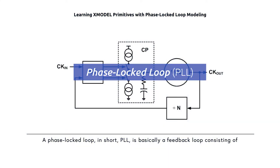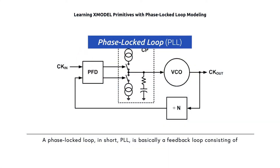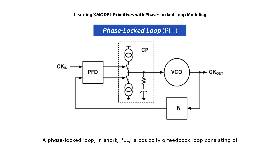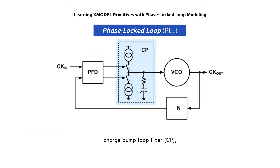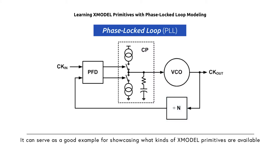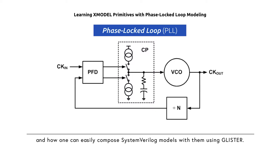A phase-lock loop, in short PLL, is basically a feedback loop consisting of a phase frequency detector, charge pump loop filter, voltage-controlled oscillator, and a frequency divider. It can serve as a good example for showcasing what kinds of X-Model primitives are available, and how one can easily compose SystemVerilog models with them using Glister.